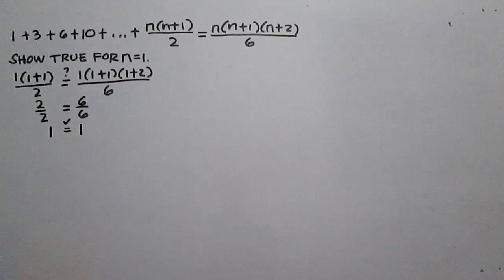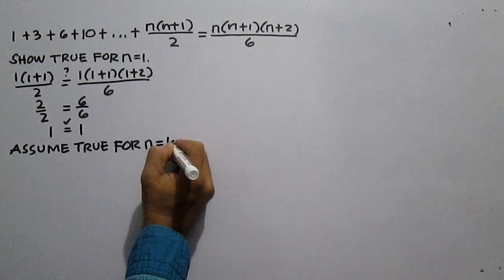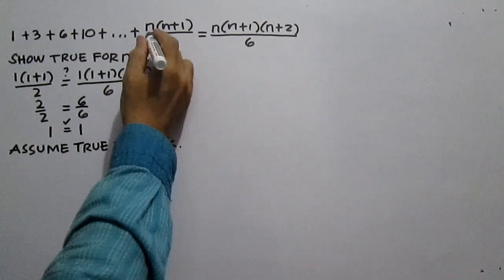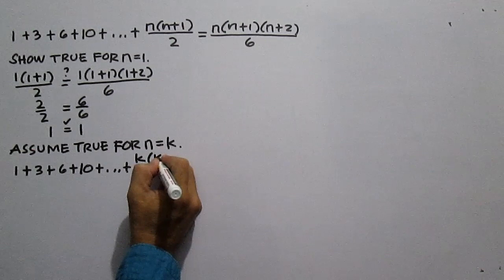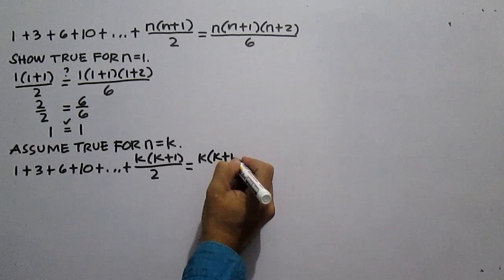Assume that the statement is true for any natural number n — assume true for n equals k. Substitute k for n: 1 plus 3 plus 6 plus 10 plus dot dot dot plus k times the quantity k plus 1, all over 2, is equal to k times the quantity k plus 1 times the quantity k plus 2, all over 6.